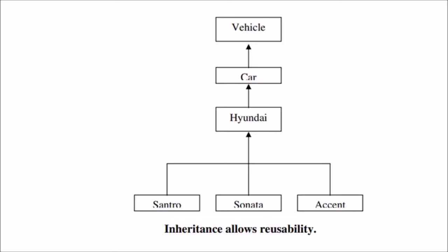As discussed in our previous example, let us consider a base class called vehicle and a subclass known as car. The car derives the properties of vehicle. Now consider another subclass known as Hyundai. Hyundai derives the properties of car, so it has all the properties of car plus all the properties of vehicle, since car is a subclass of vehicle. Further, we can see three more classes — Sandro, Sonata, and Accent — all inheriting the properties of Hyundai. This hierarchical inheritance is a key property of the object-oriented concept.